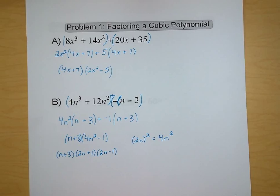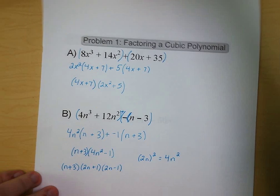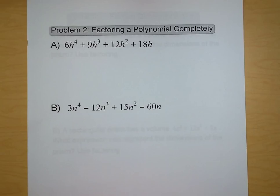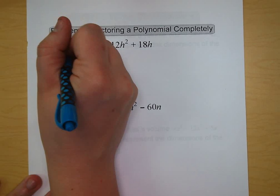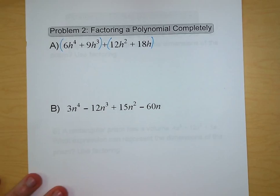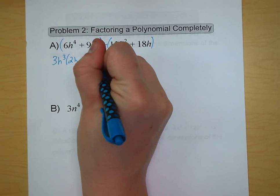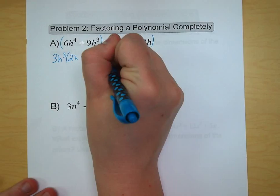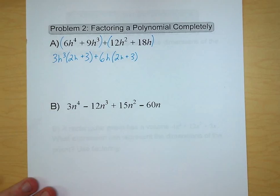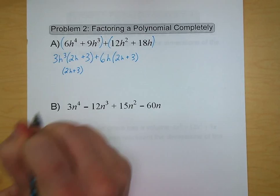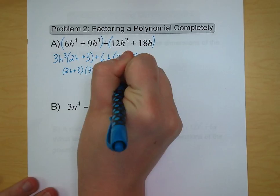Moving on to problem number two — some more practice with factoring a polynomial completely. We have 6h to the fourth, 9h to the third, plus 12h squared, plus 18h. We're going to break it up into our two pieces again. We have 3h cubed that we can pull out of our first term, and we're left with 2h plus 3. We can factor out a 6h from our second term, and we're left with 2h plus 3 again. Now we've got a 2h plus 3 that we can factor out, and what's left is going to be 3h cubed plus 6h. That looks like I can factor it a little bit more, and so we're going to.